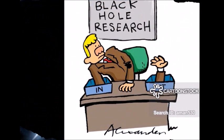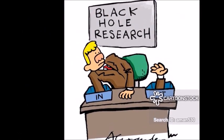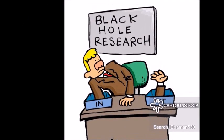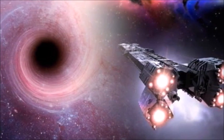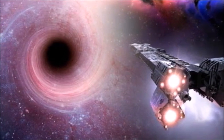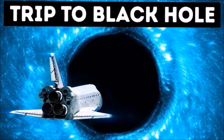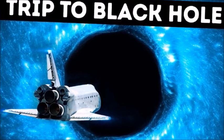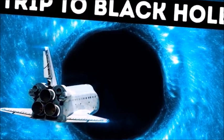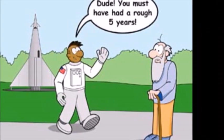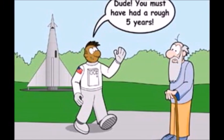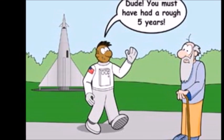Around and around they go, experiencing just half the time of everyone far away from the black hole. The ship and its crew would be traveling through time. Imagine if they circled the black hole for five years. Ten years would pass everywhere else. When they get home, everyone on Earth would have aged five years more than they had.